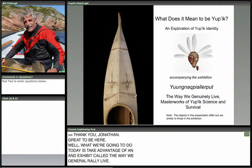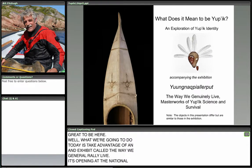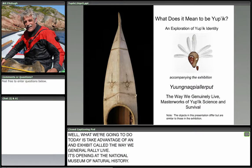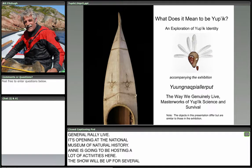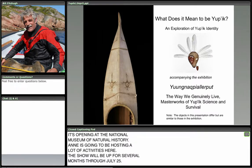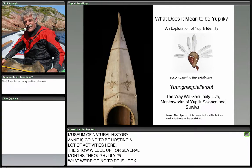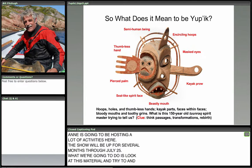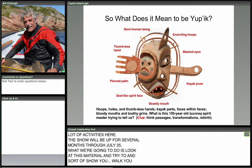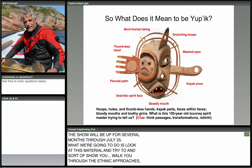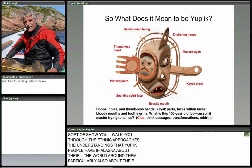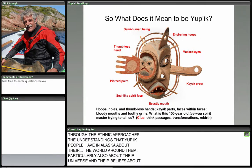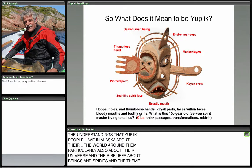The show was curated by Ann Fiena Brearden of Anchorage, Alaska, a research associate at the Arctic Studies Center in the Department of Anthropology. She'll be hosting a lot of activities, and the show will be up through July 25th. We're going to look at this material and walk you through the ethnic approaches and understandings that Yupik people in Alaska have about the world around them — particularly about their universe, beliefs about beings and spirits. The theme is: what does it mean to be Yupik?